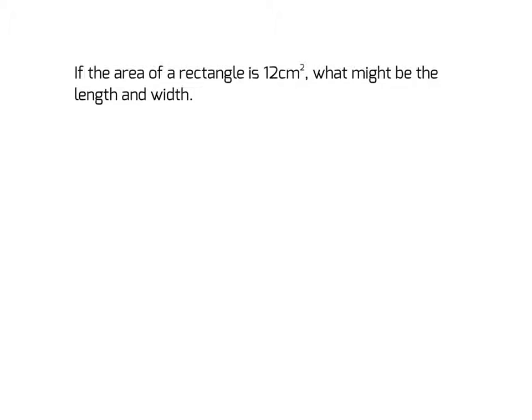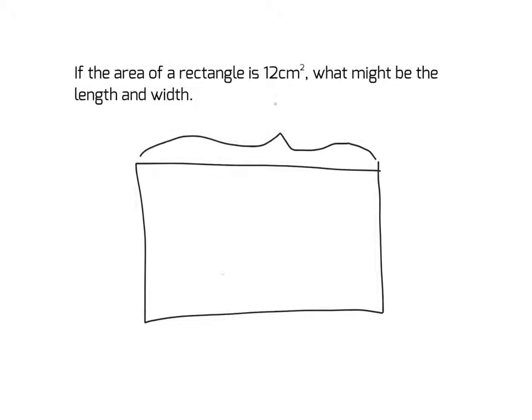If the area of a rectangle is 12cm squared, what might be the length and the width? So if we had a rectangle like this, we don't know the width, and we don't know the other dimension, the length. But we do know the area. And I know that the area is equal to the length times the width for a rectangle.